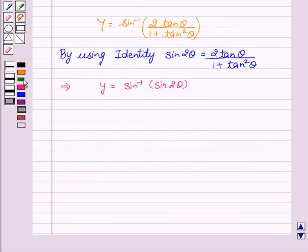Here we see that sin and sin inverse cancel out. This implies y equals 2 theta. Now, this implies y equals 2 into tan inverse x.